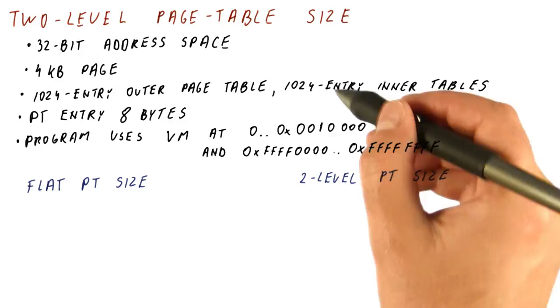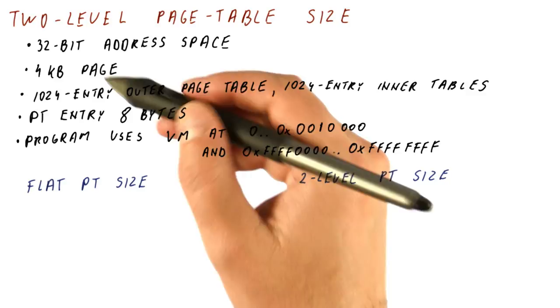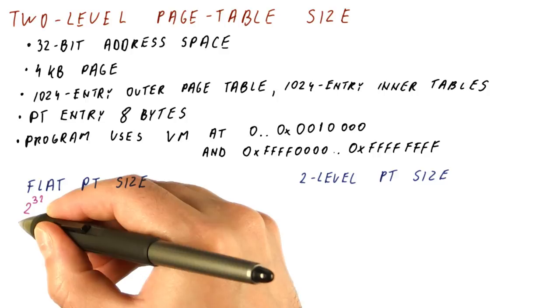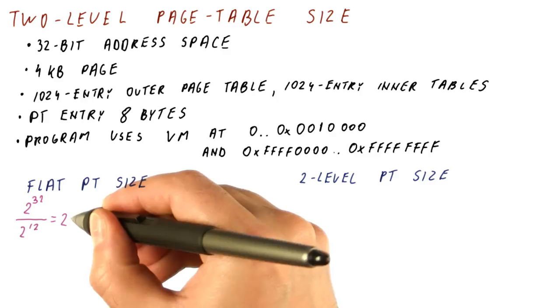The flat page table size will have one entry for each possible page. So we have 2 to the 32nd pages, 2 to the 12th bytes in each page. So we have 2 to the 20th entries.